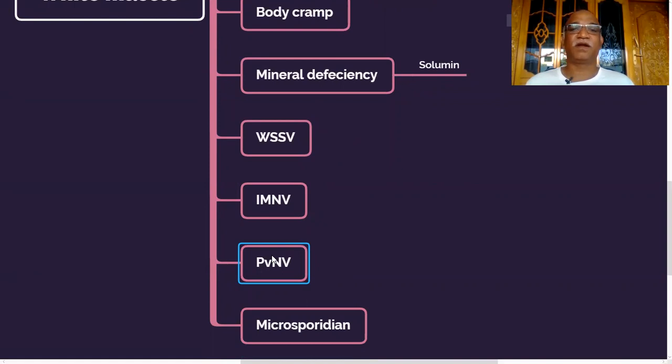And the 10th reason is Microsporidium. A particular species called Silohania or Agmasoma. This is not reported in India. It's very common in Thailand.